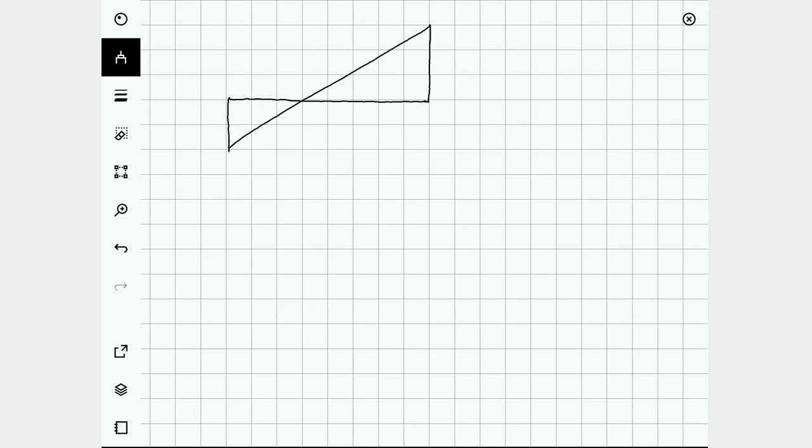All right, so here we have a figure that's given to us with two right angles in it and five points marked as A, B, C, D, and E.